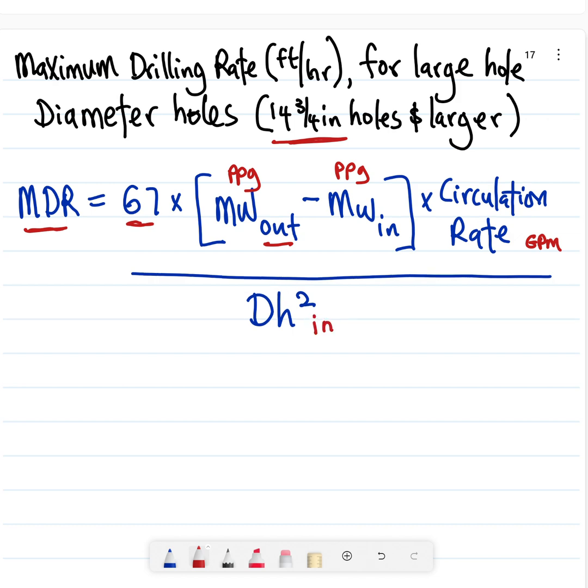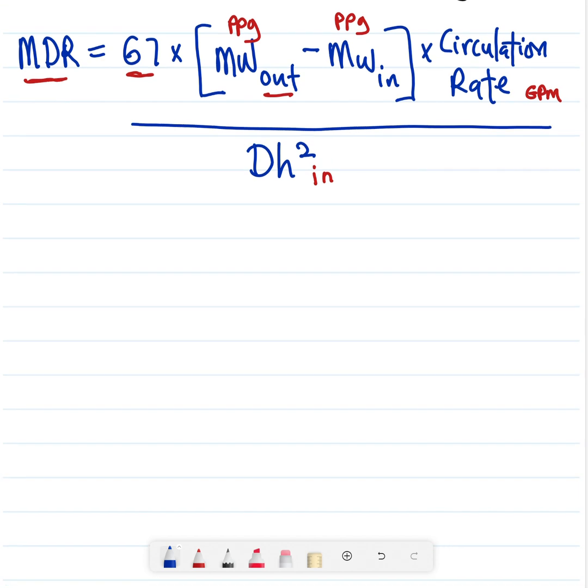Once you have your parameters there, you plug it in and you can go ahead and solve the equation. So quickly, let's go with an example. Say, for example, your mud weight out while drilling, you really noticed that while you were drilling, your mud weight out is about 9.7 pounds per gallon, and your mud weight in is about 9.0 pounds per gallon.